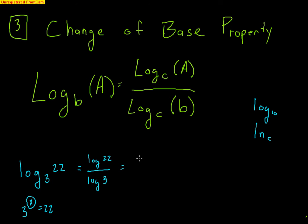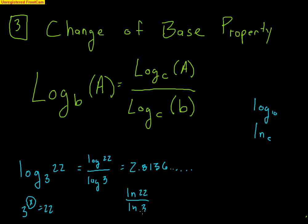If I go to my calculator, I do log base 10 of 22 divided by log base 10 of 3, and I quickly get 2.8136. That means 3 raised to 2.8136 is approximately 22 — approximately because there are more decimals. Likewise, you could use log base e: natural log of 22 divided by natural log of 3. As long as your value goes on top and your old base goes on the bottom, you get the same answer, 2.8136.